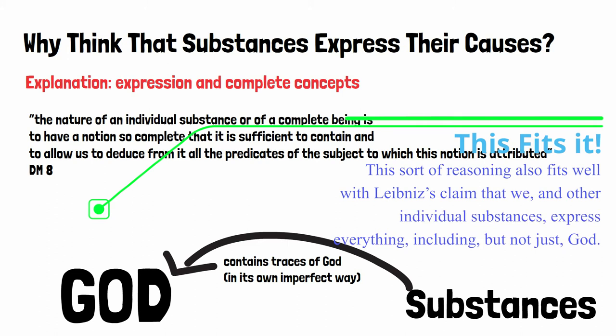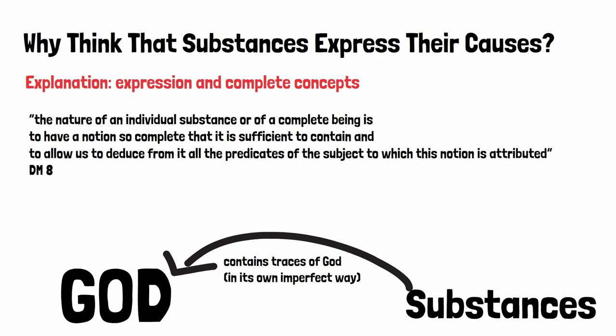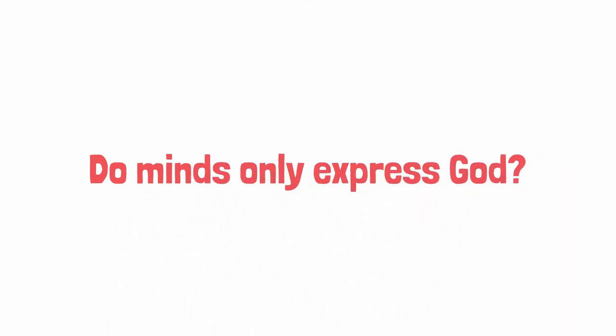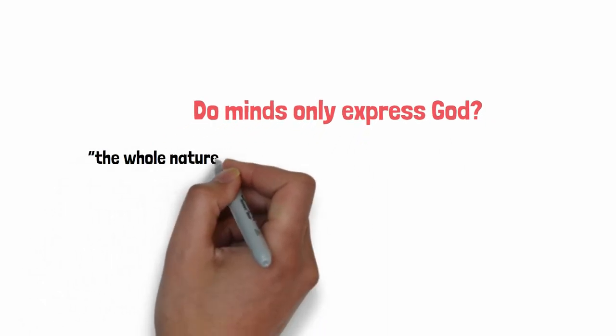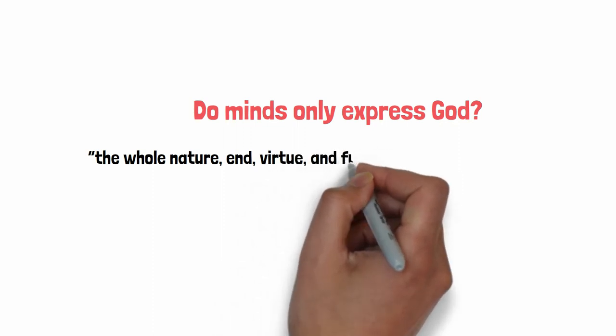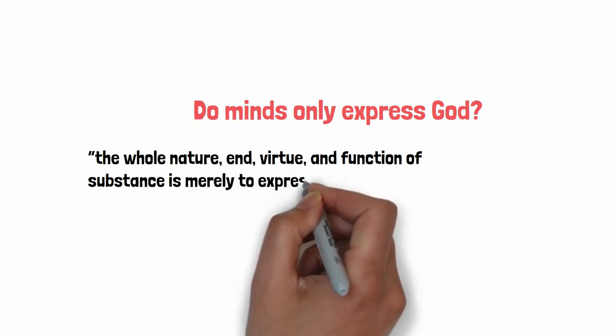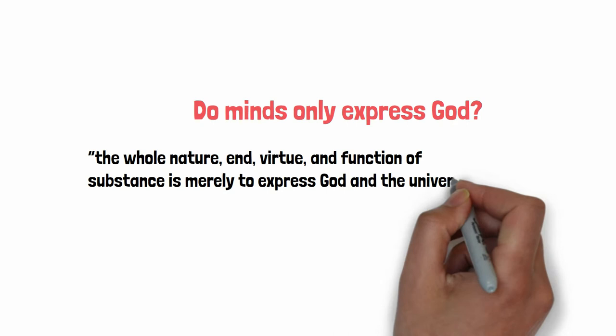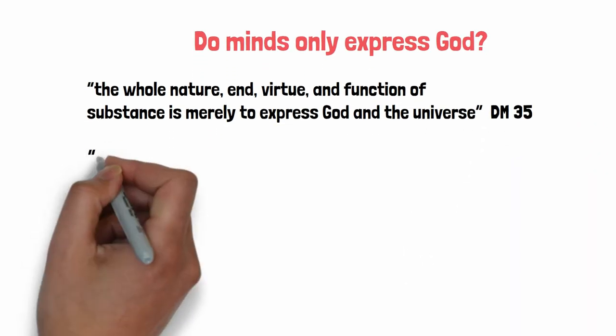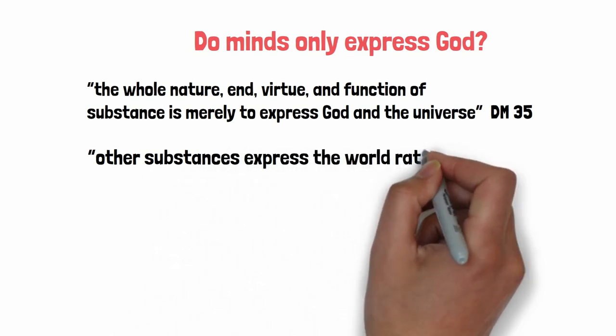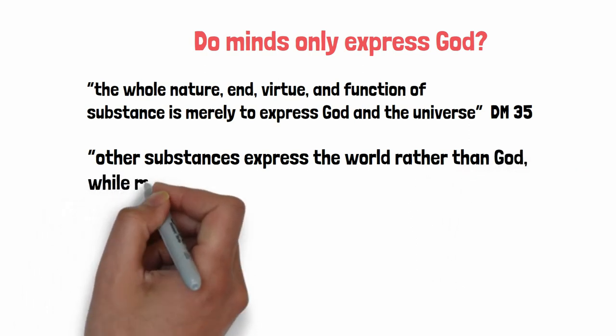The complete concept view leads to thinking that all individual substances, including ourselves, have concepts representing everything else. In DM 35 we are told that the whole nature and virtue and function of substance is merely to express God and the universe. But in DM 36 he appears to deny that all substances express God, for there he says that other substances express the world rather than God, while minds express God rather than the world. So which is it? Do only some individual substances express God, or all of them?